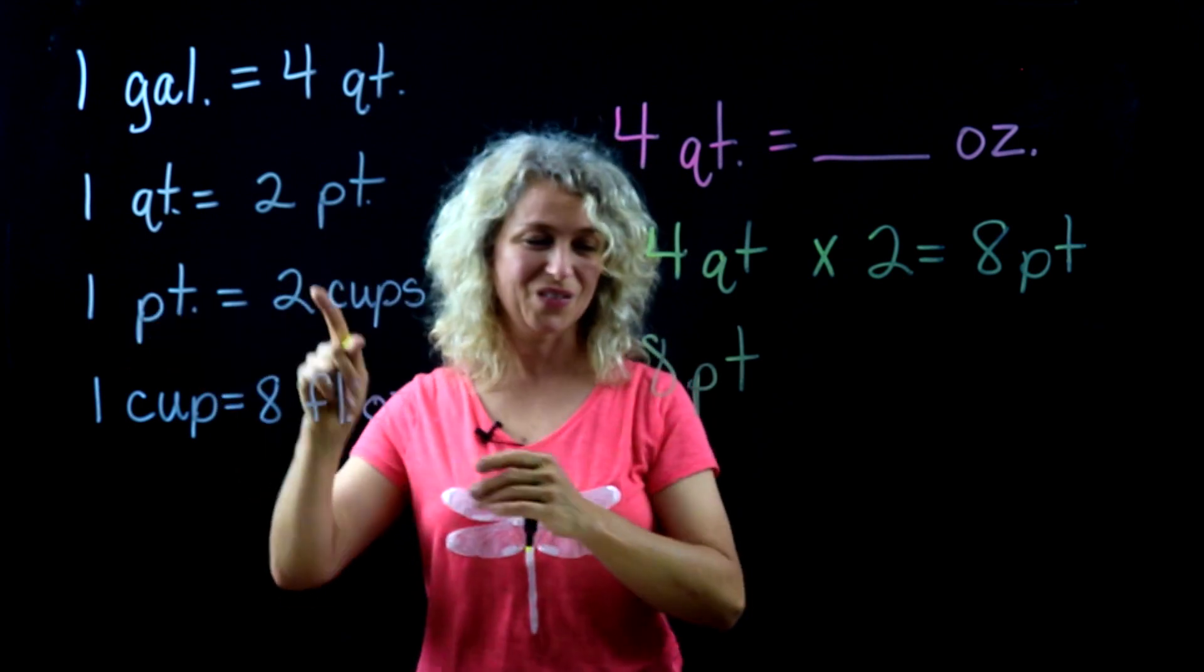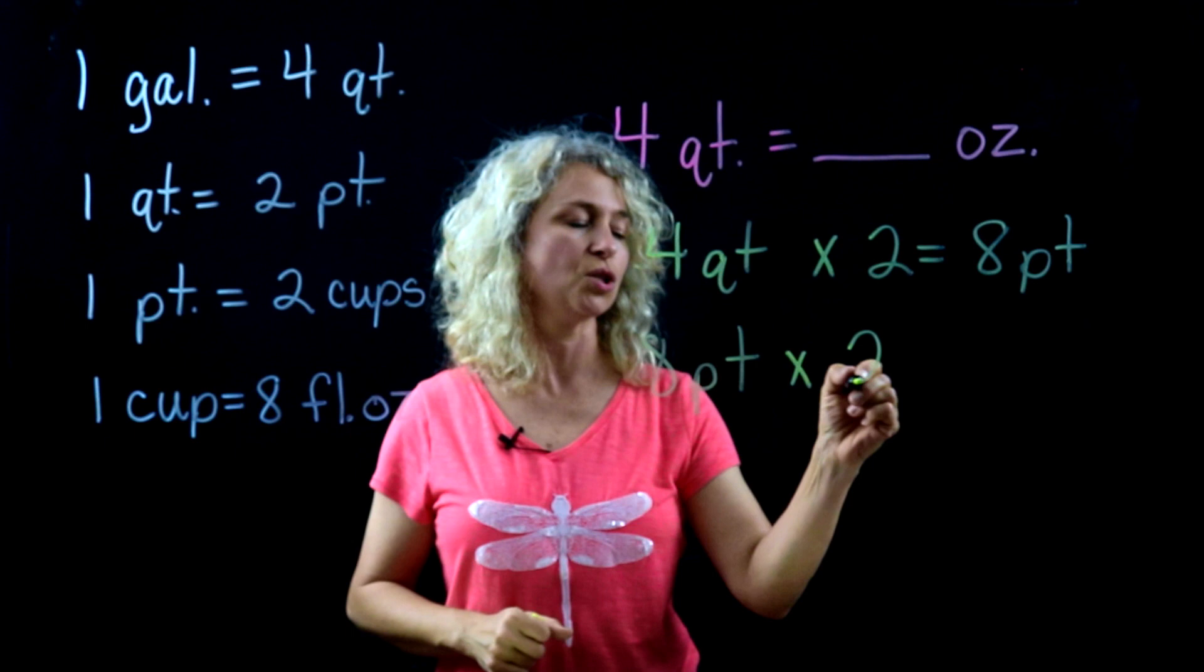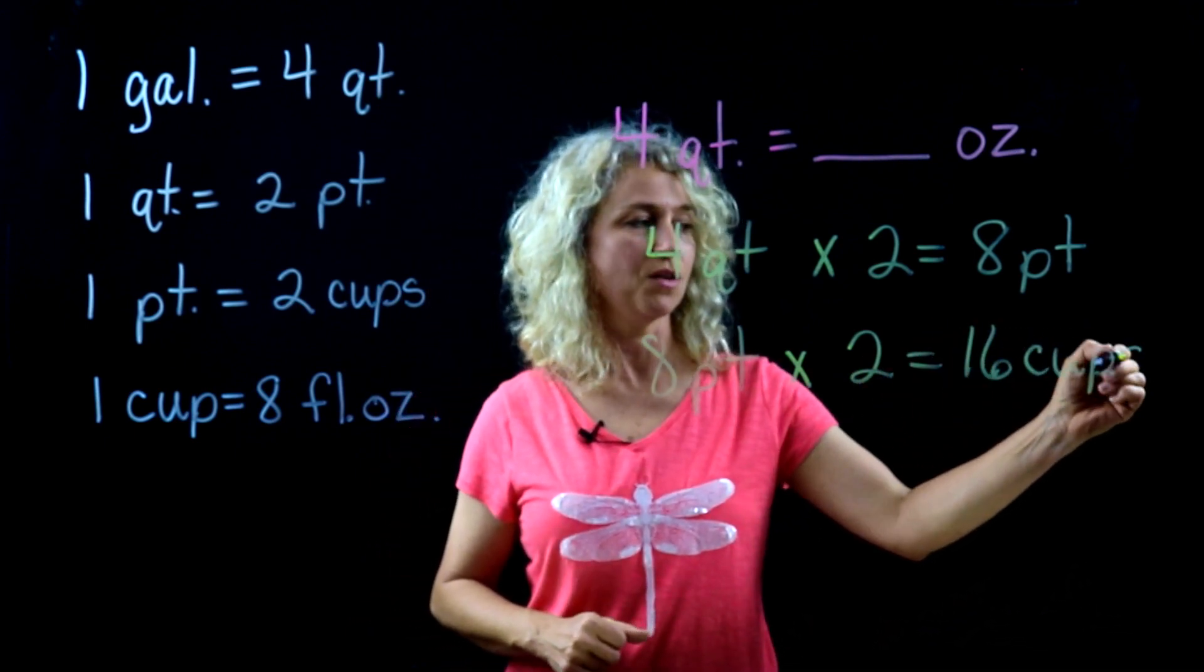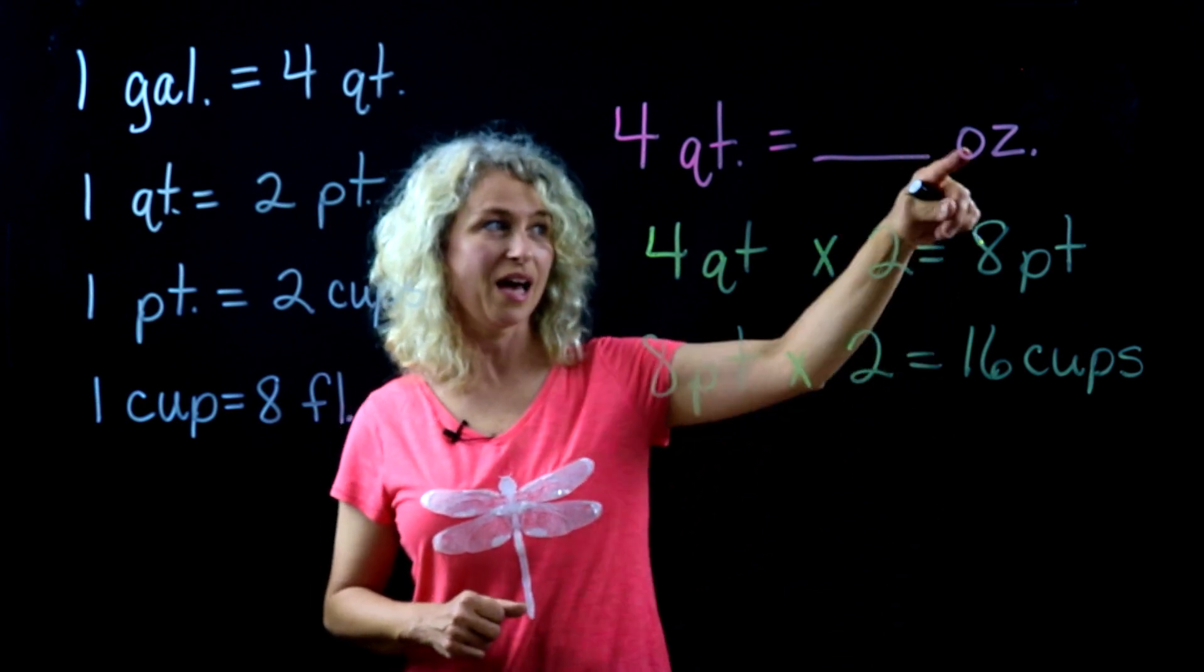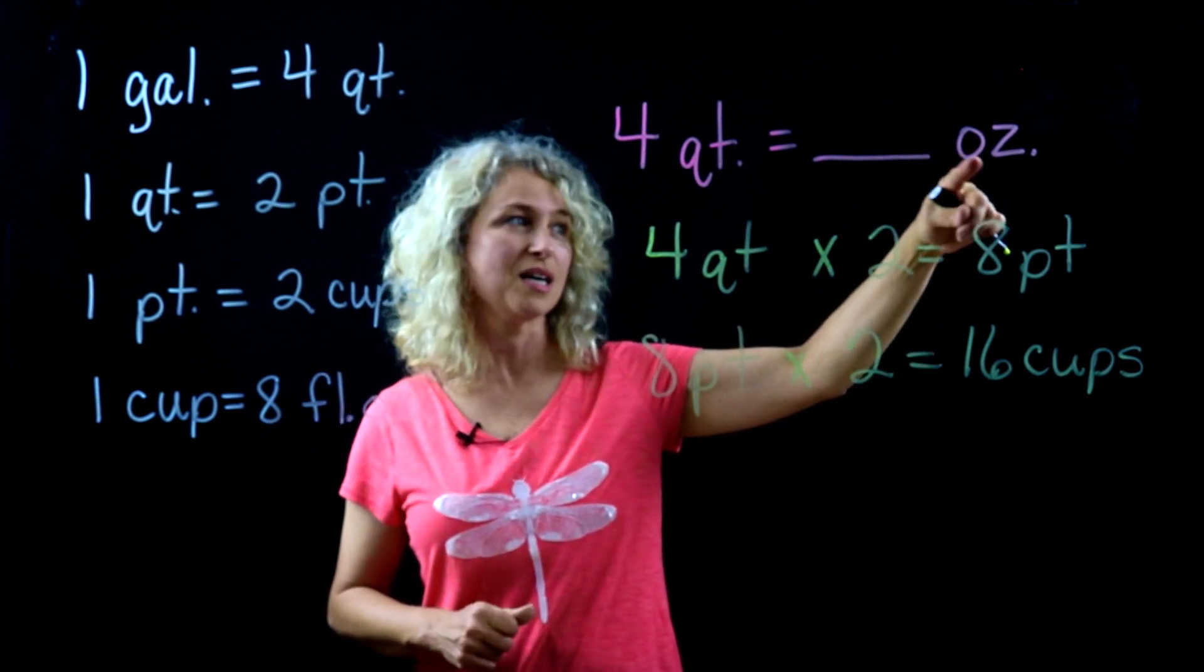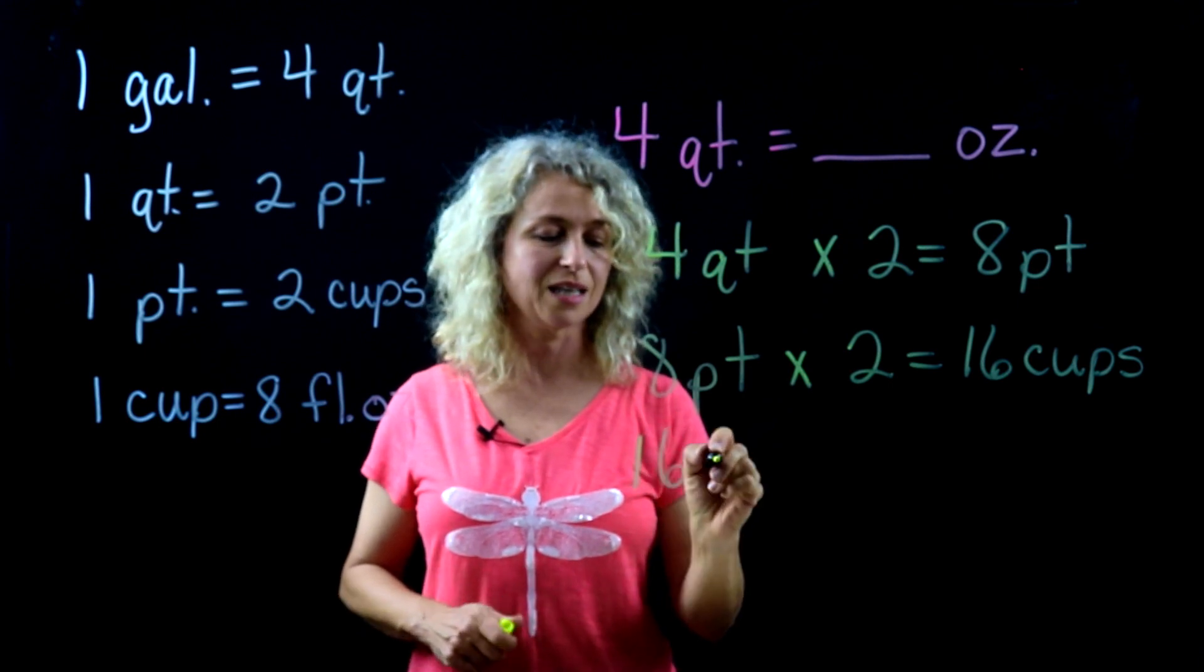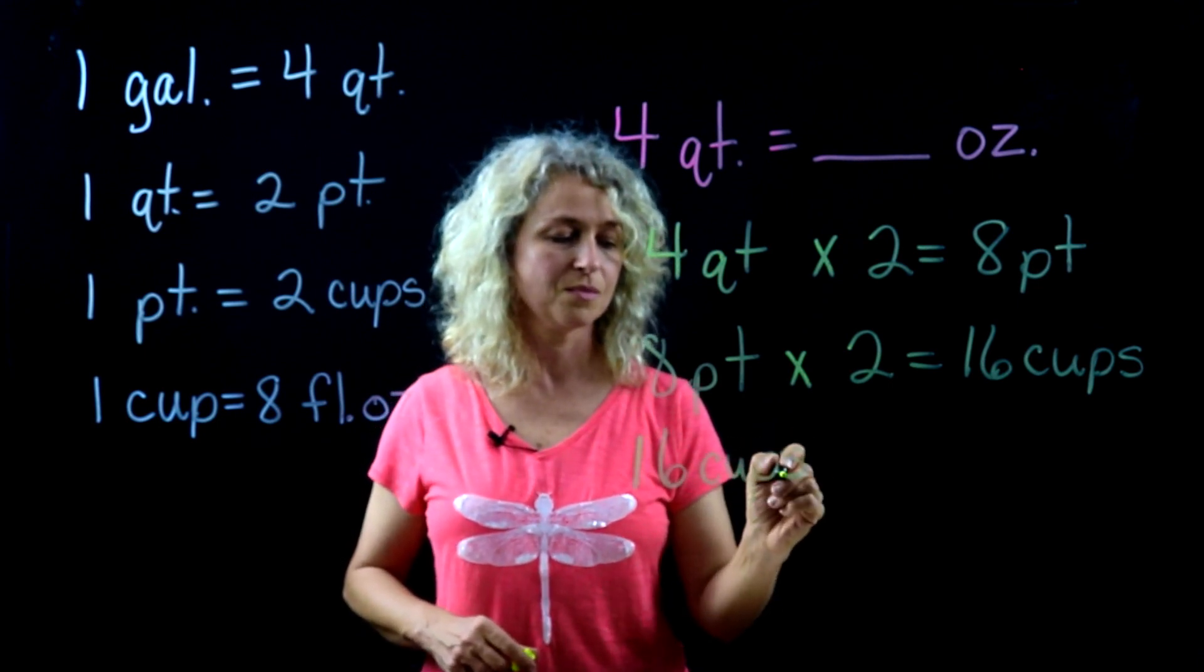Eight pints, and we're changing the pints to cups. How many cups are in a pint? Two. So times two, which is 16 cups. Are we finished yet? No, we're not, because we're trying to get to ounces.